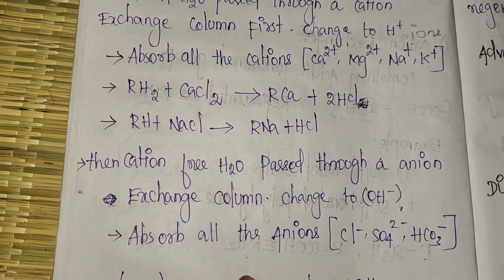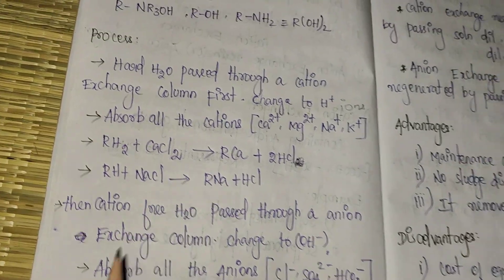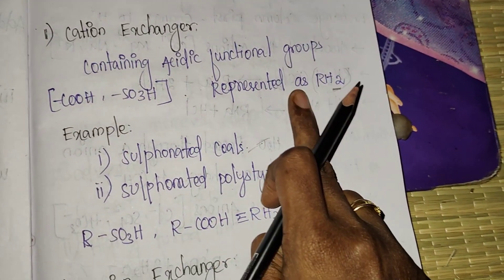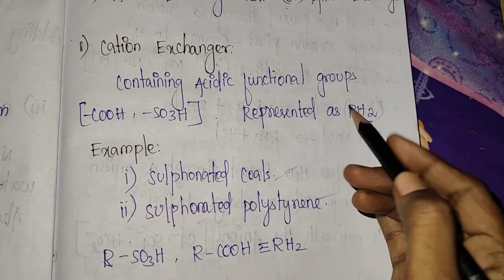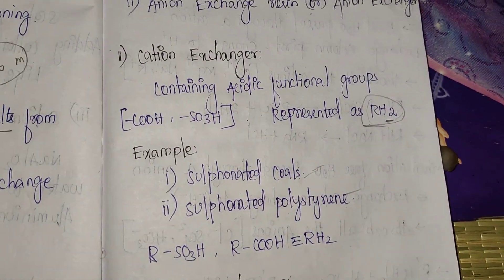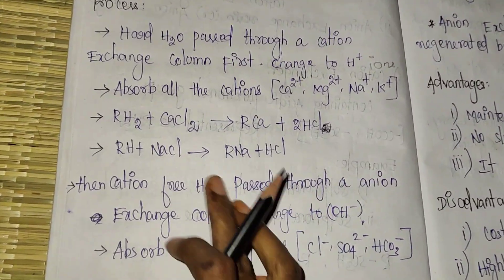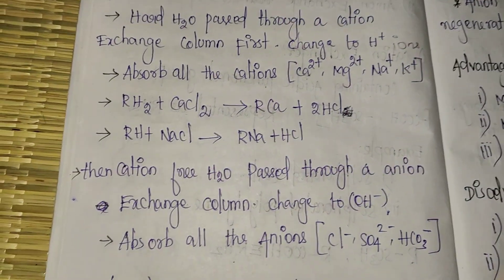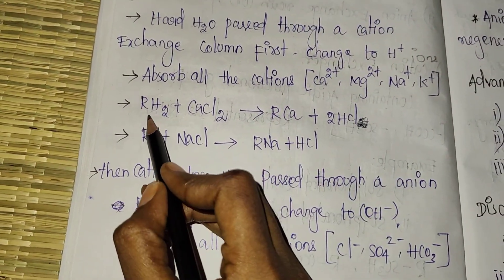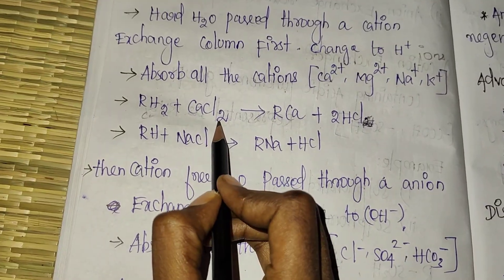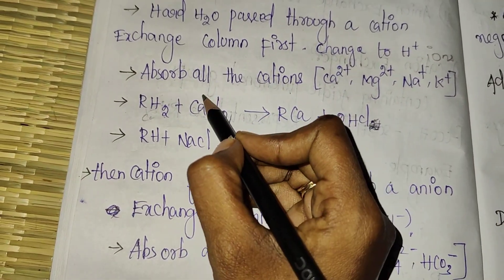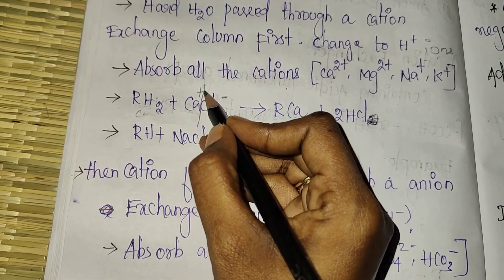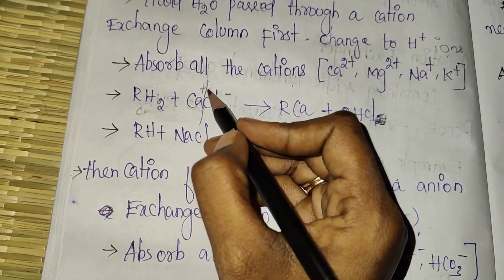For example, in the cation exchanger, consider calcium chloride (CaCl₂). When calcium chloride passes through the cation exchanger, calcium (Ca²⁺) is separated out. The calcium 2+ cation is exchanged in the cation exchanger, producing H⁺ ions and HCl.